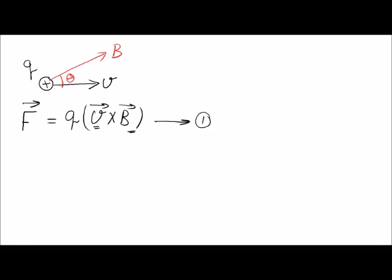If we would like to have the magnitude of the force, it will be Q times the magnitude of the velocity times the magnitude of the magnetic field, multiplied by sine theta, which is the angle between the velocity vector and the magnetic field vector.